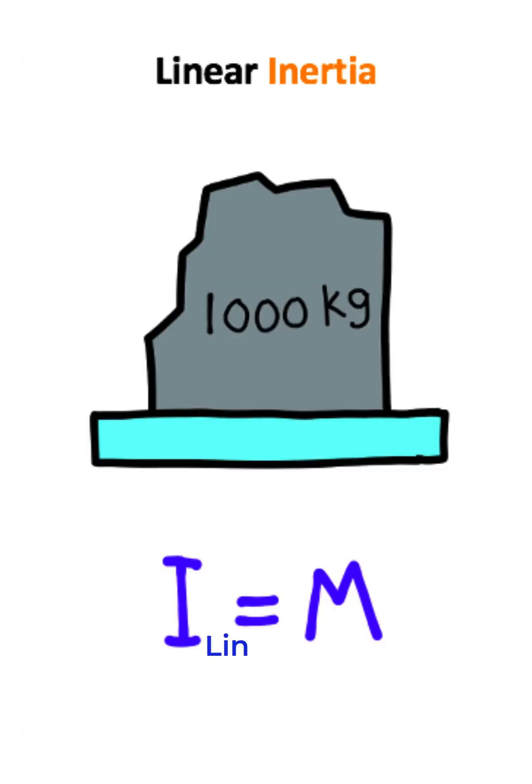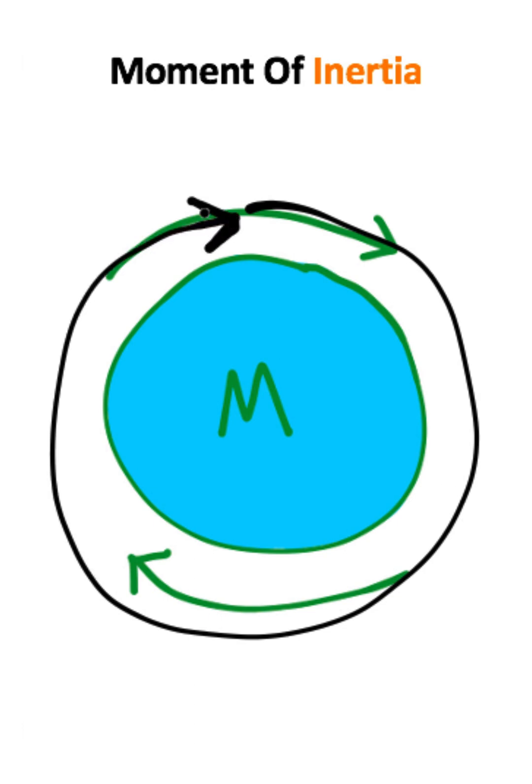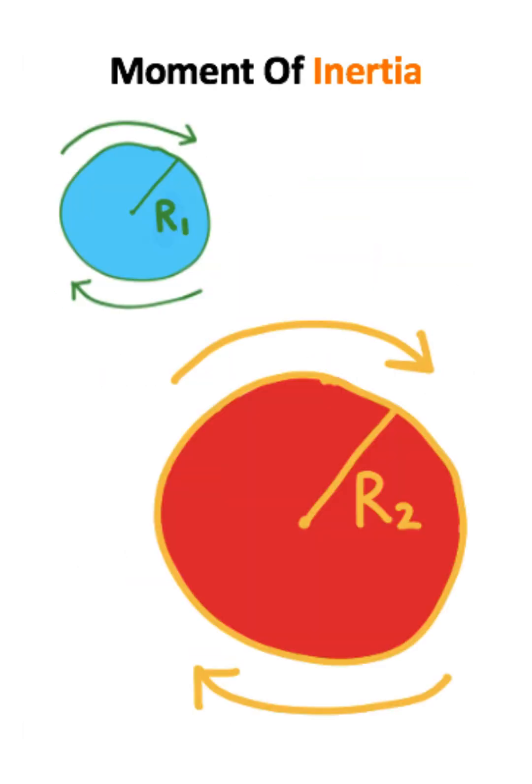Now, when thinking about the moment of inertia, rather than dealing with objects moving in a straight line, we're dealing with objects that are rotating. And the resistance of movement for a rotating object does not only depend on the mass of the object, but it also depends on the geometric shape as well as the size of the object.